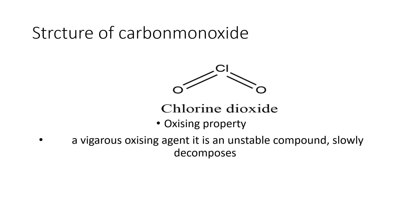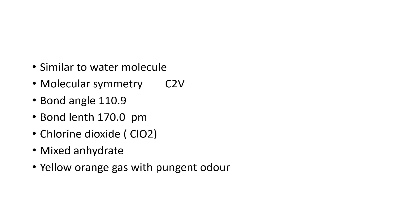Now come to structure of Chlorine Monoxide. If you look at the structure, the Chlorine is located at the center and 2 Oxygen atoms are attached to the centrally located Chlorine with 2 double bonds. The structure is similar to the water molecule and regarding symmetry, it possesses C2V symmetry. Bond angle 110.9 degrees. Bond length 170 pm.